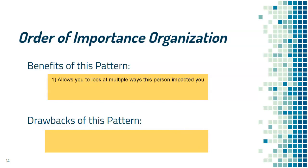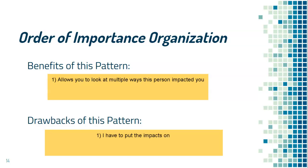A potential drawback is that I have to put the impacts on a hierarchy, which might feel weird. Like, my grandmother impacted me and it was good — it's not that one way is better than the other. If you don't feel comfortable putting them in order and saying this one is more important than another, then don't do this. If you don't want to say they impacted me a little bit here but mostly here, and that makes you feel uncomfortable because you have a close relationship with this person, then don't choose this.